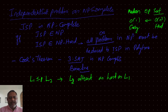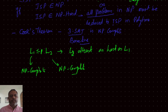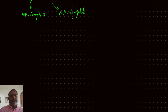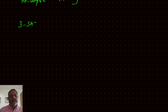Whenever such a reduction exists, the left-hand side is the easier problem and the right side is the harder problem. If L1 reduces to L2 in polynomial time, then L2 is at least as hard as L1. If L1 is known to be NP-complete, then this directly proves that L2 is also NP-complete.